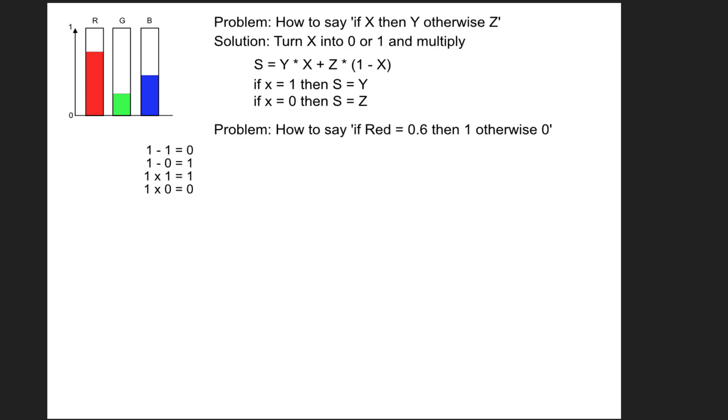Some of the things we can get along the way - here's an example: how to say if red is 0.6, then I want it to be 1, otherwise 0. And the solution is subtract, absolute, and round.